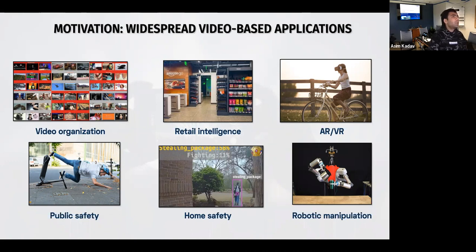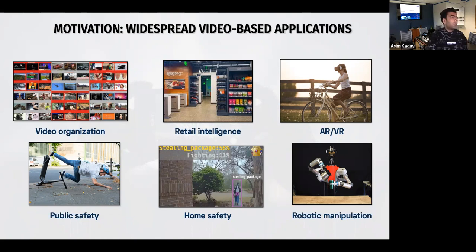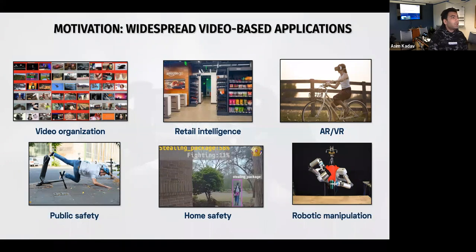Video intelligence or video-based techniques are also used in retail, for example for things like self-checkout, to detect long checkout lines, or to detect how customers are interacting with products. In the AR/VR space there is a problem of human pose estimation as well as pose tracking, where the AR/VR system needs to detect where the hands of the person are. This is a video understanding problem because you have to understand the human key points in the real world. There are other applications in public and home safety, and finally in robotic manipulation, where you have to navigate the robot around — a combination of computer vision and robotic planning.